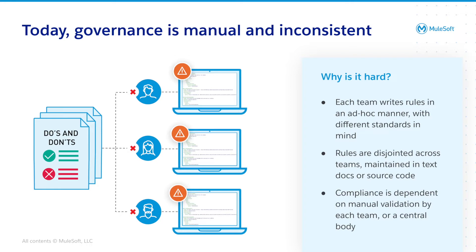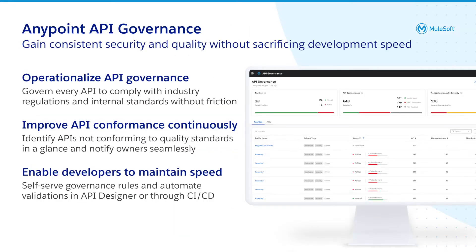So how does API Governance solve these pain points? Through the API Governance portal, you can operationalize API governance by being able to scan every API against a set of rules and inspect the conformance of your API estate. You can check whether APIs are in line against a certain industry regulation, or see if they meet your own internal standards by defining which rules to apply to what kind of API through tagging.